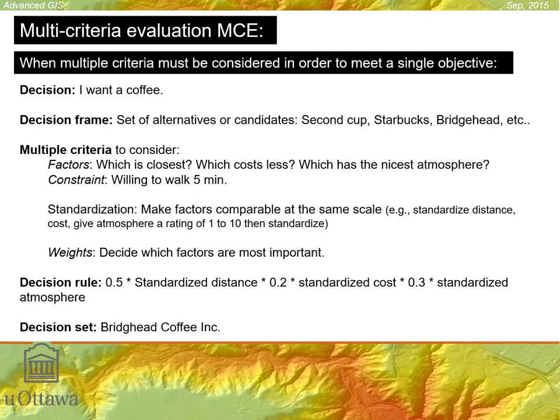Then you consider what factors you want to take into account to get your coffee. Factors are things like which of the decision frame alternatives — Second Cup, Starbucks, etc. — are closest, which have the best prices, which have the nicest atmosphere. Also, how far are you willing to go? Let's say you're willing to walk for five minutes.